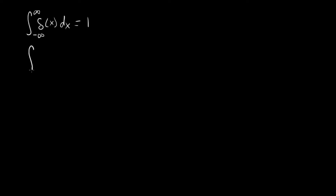Here's an easy example: integrating 2 times delta of x. We know how to do integrals like this — you just pull out the 2. We know the integral of delta of x is 1, so the answer is 2. Easy.